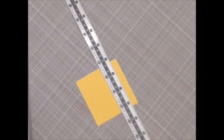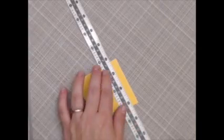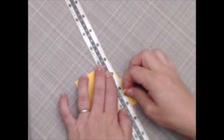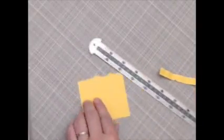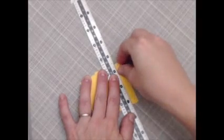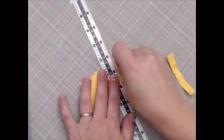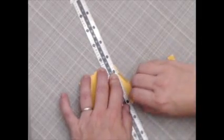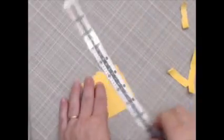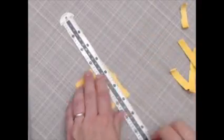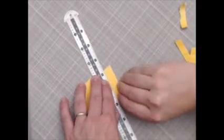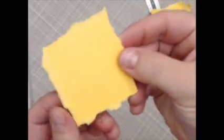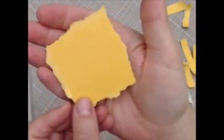This first technique is using a straight edge or a ruler and just basically tearing along the ruler edge. You can pull away and towards the ruler to get an uneven edge, and you can go all the way around the square or your edges to be able to make a really neat torn edge frame. And here you have basic torn edges.